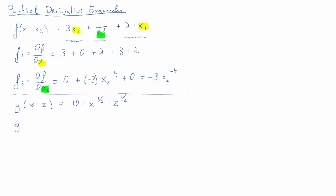Let's calculate the partial derivative with respect to x, so gx or delta g over delta x. We'll do the same trick as before: recognise what is our variable x, and everything else is a constant. Since we have a multiplication here, everything else — the 10 and the z to the half — are constant to our function in x.